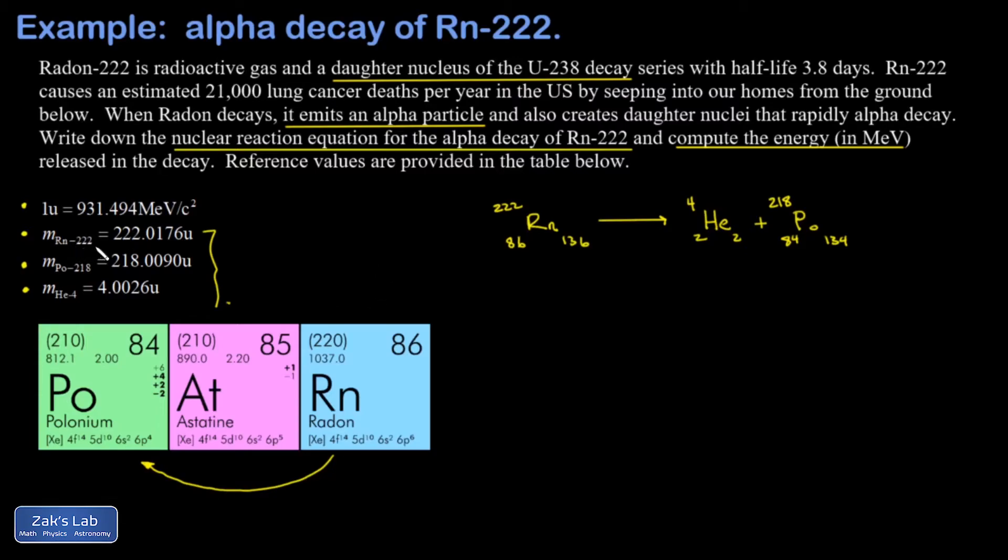This is the mass of radon-222 with all of its 86 electrons, the mass of polonium-218 with all of its 84 electrons, and the helium with its two electrons. Fortunately, this doesn't cause a problem because the electrons just cancel out of the calculation. The idea for finding the total energy released is to compare the mass we started with to the mass we ended up with.